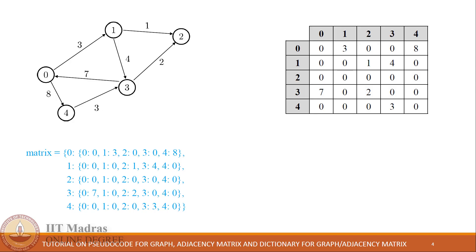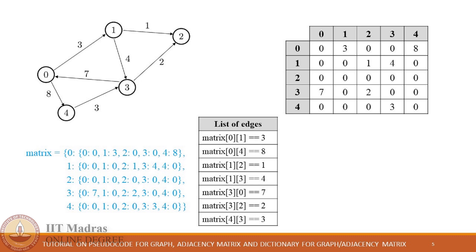Therefore, by using a pair of two keys from the dictionary we can access any element inside it, similar to a matrix. For example, if you want to access the edge between vertex 4 and 3, we will refer to it using row 4 and column 3. Similarly, we can refer to it as matrix[4][3], which will give us its label value, which is 3.